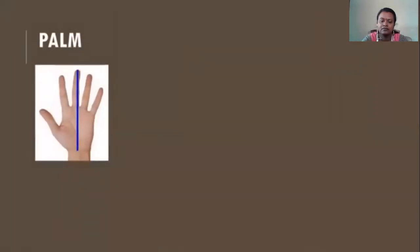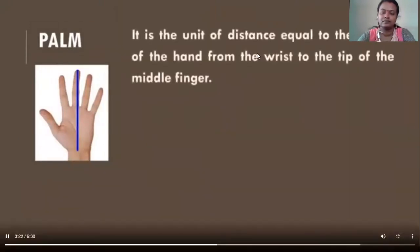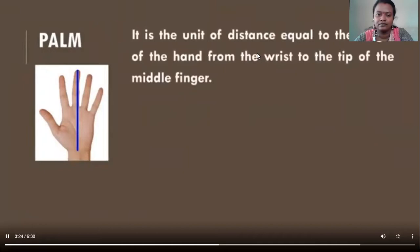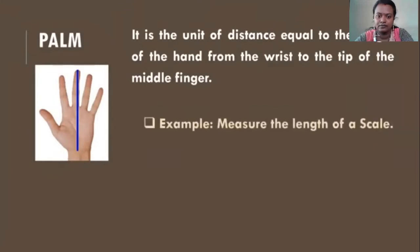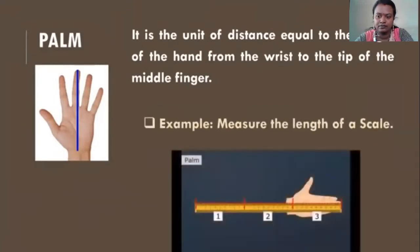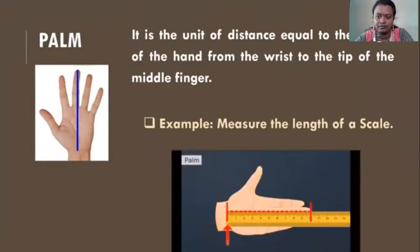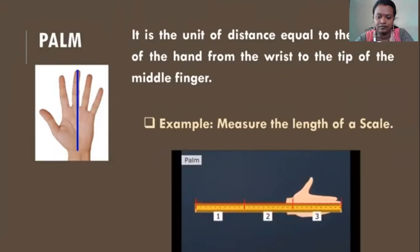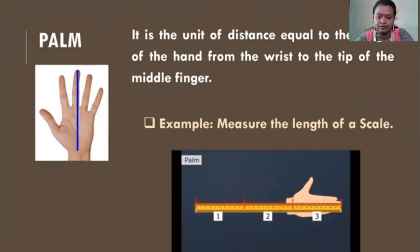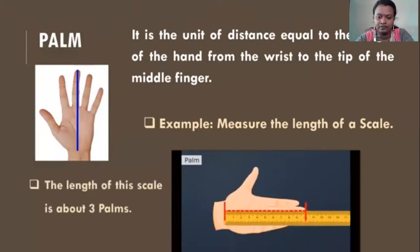Palm is a unit of distance equal to the length of the hand from the wrist to the tip of the middle finger. For example, let us measure the length of a long scale using palm. The length of this scale is about 3 palms.